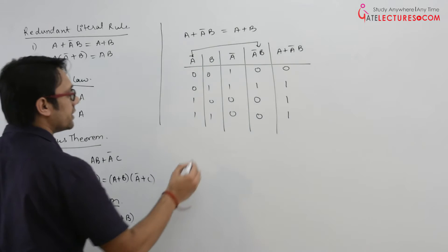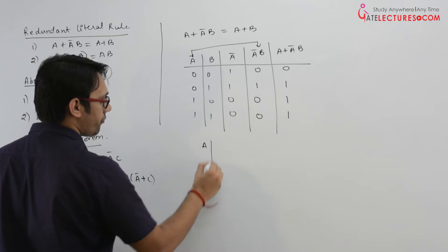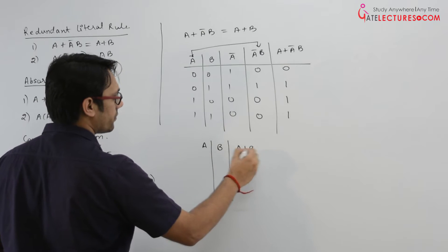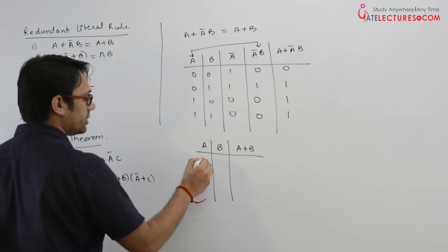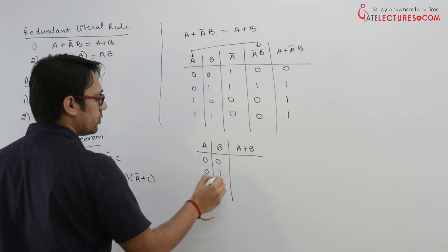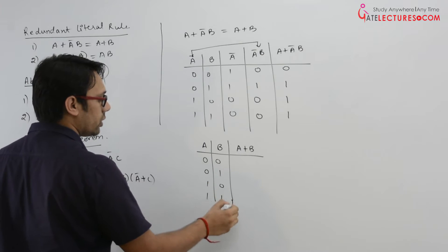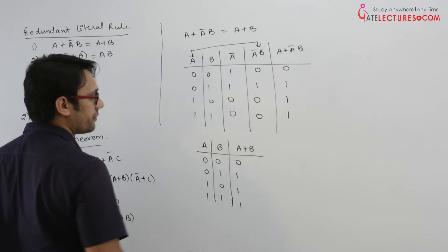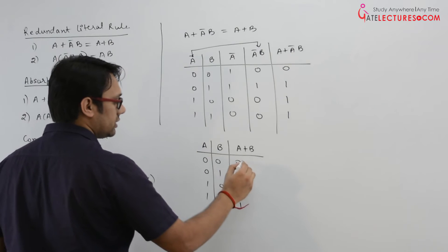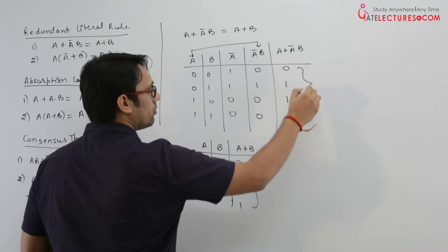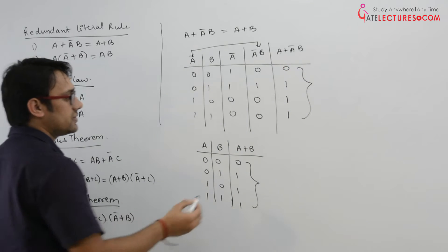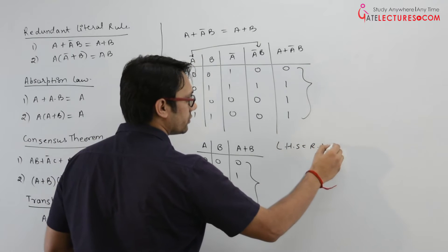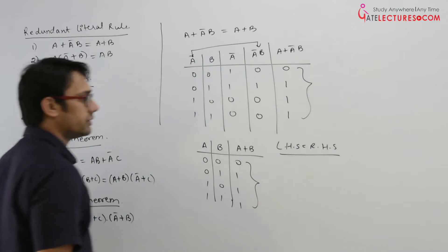Now if we make A plus B, assume this is A, this is B, and this is A plus B. Their combinations are 00, 01, 10, 11, and A or B is 0, 1, 1, 1. As you can see, both columns are the same. So we can say left-hand side is equal to right-hand side, hence proved.